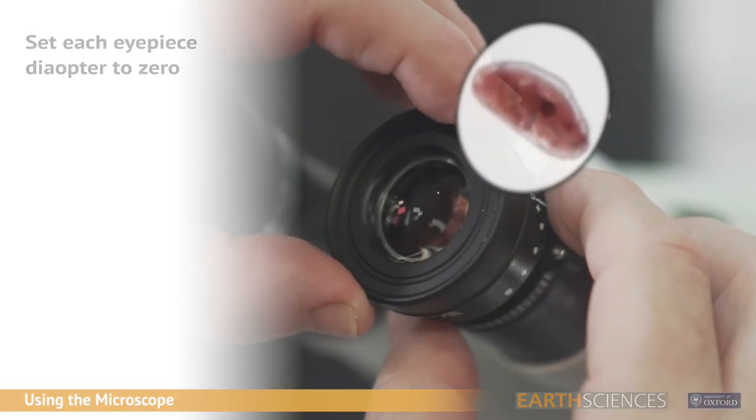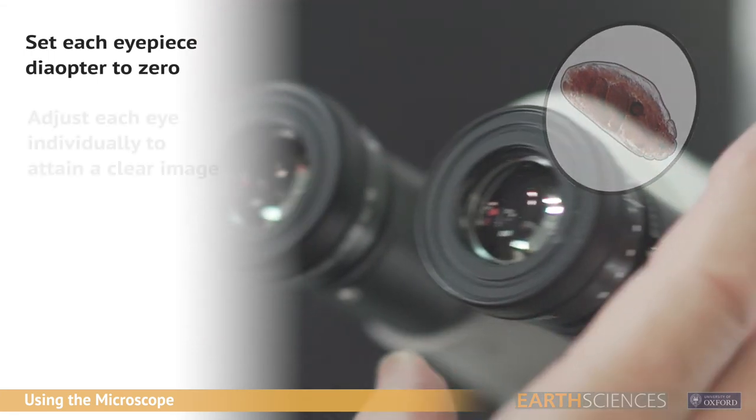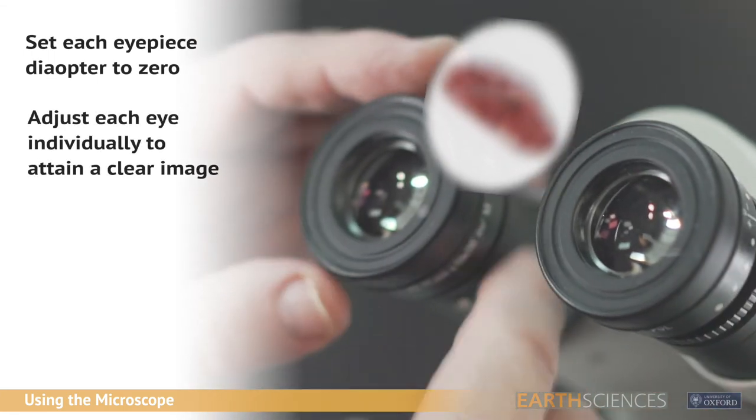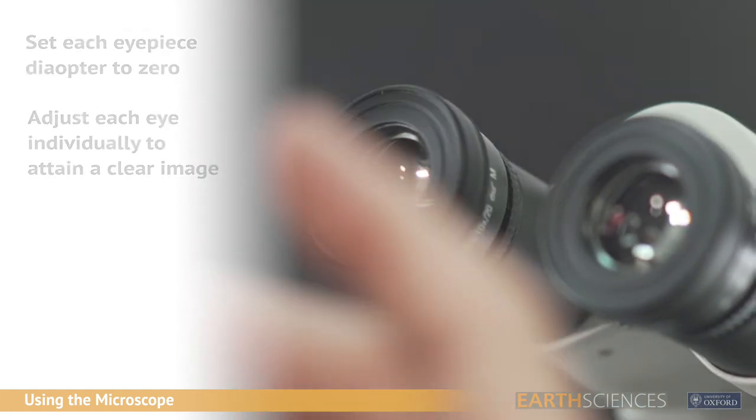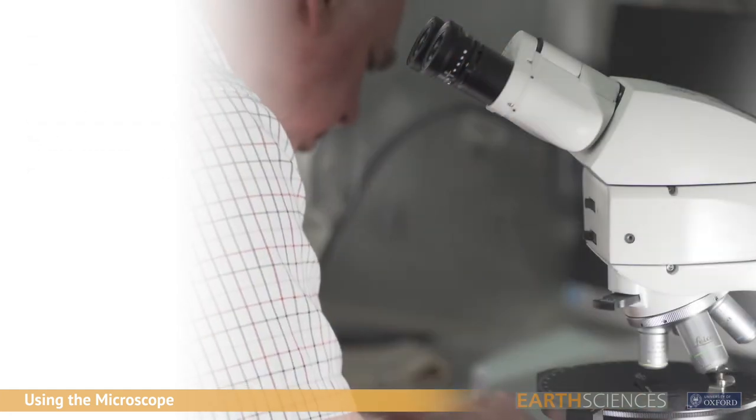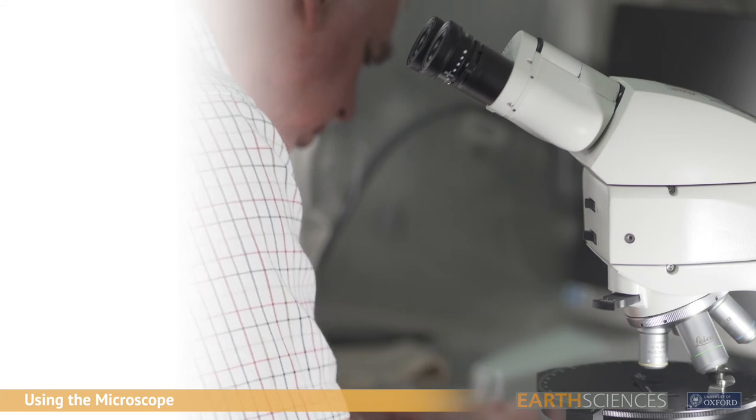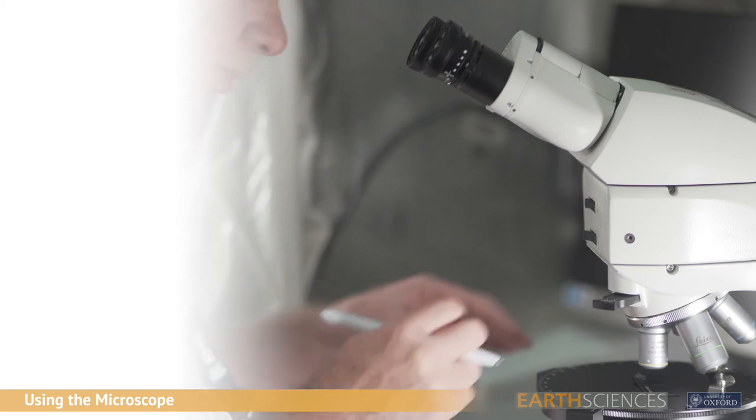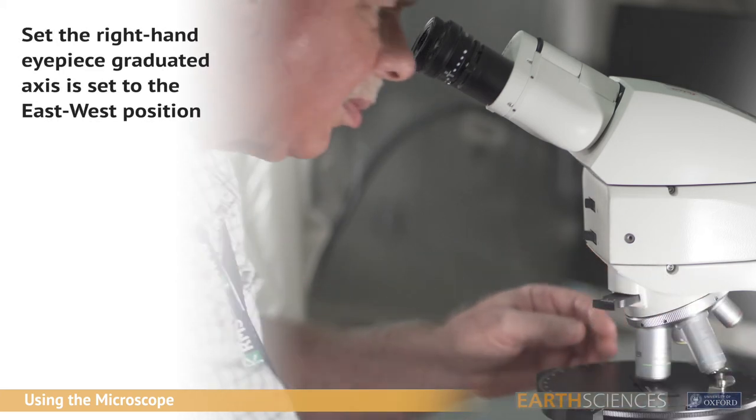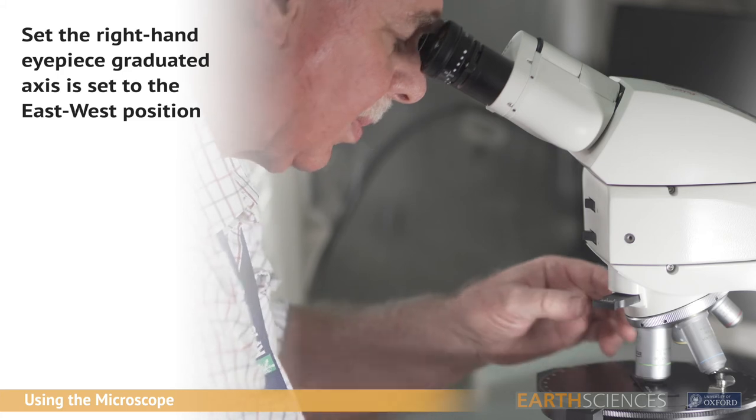To attain a sharp image based on your eyesight, rotate each eyepiece diopter to zero and adjust each eye individually until the image is most in focus. The right-hand eyepiece contains a graduated cross-line graticule which needs to be sharply focused for the user's right eye. Ensure that the graduated axis is in the east-west position.